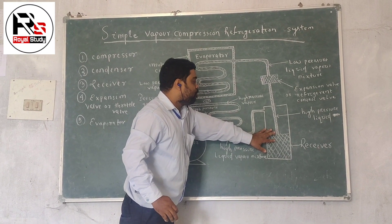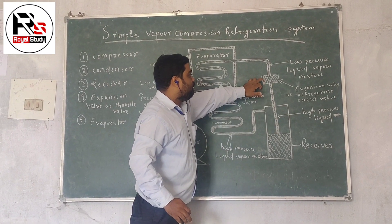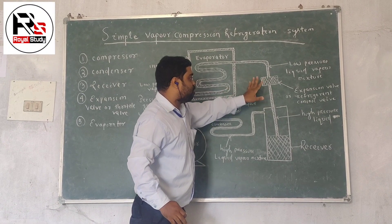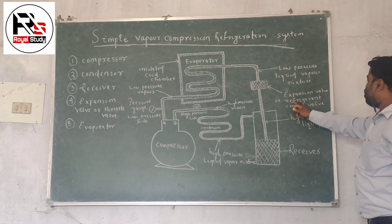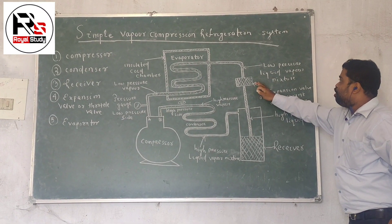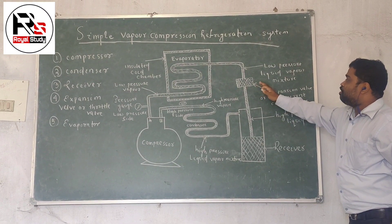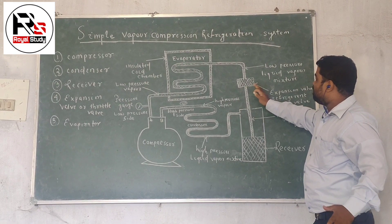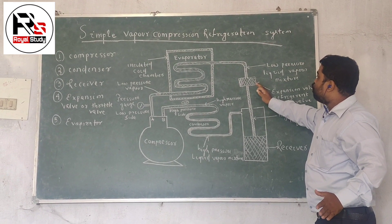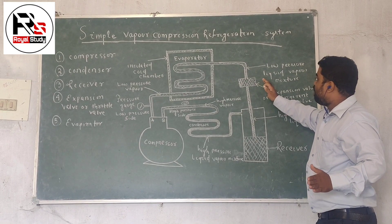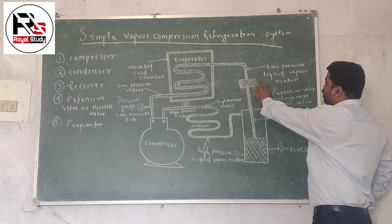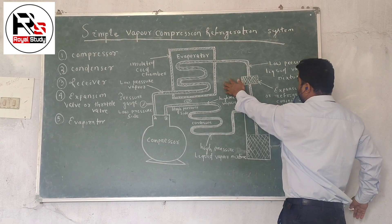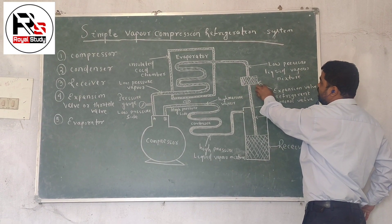When it is stored in the receiver, then it comes to the expansion valve. The high pressure liquid goes to the expansion valve. The expansion valve is also known as a refrigerant control valve. The main function of the expansion valve is to control the high pressure liquid refrigerant at a controlled rate, in order to reduce its temperature and pressure. After reducing temperature and pressure, it comes to the evaporator.